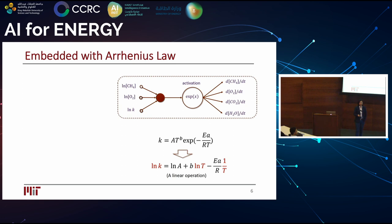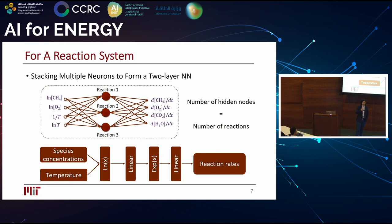Similarly, to incorporate the Arrhenius law, we just express the reaction rate constant as a function of temperature and activation energy. This applies to a single reaction. For a detailed mechanism with many reactions and species, we stack them together: the input layer has normalized concentrations for all species plus temperature, the hidden layer nodes represent the number of reactions, and the output gives the reaction rate for all species.